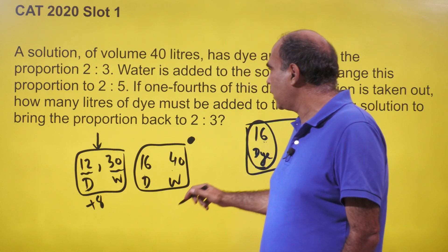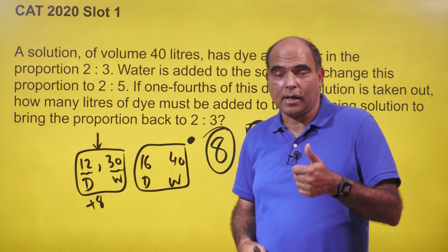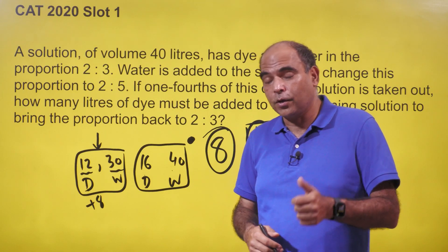To bring the proportion back to 2 is to 3, and that's the correct answer. Three marks in CAT is as simple as that. Do follow for more and hope you're enjoying the series.